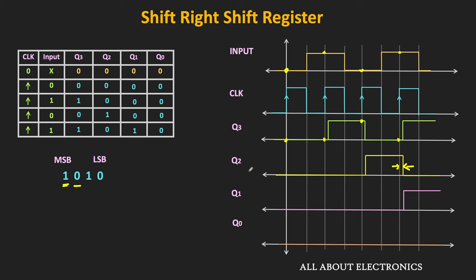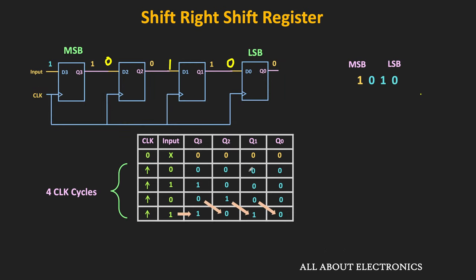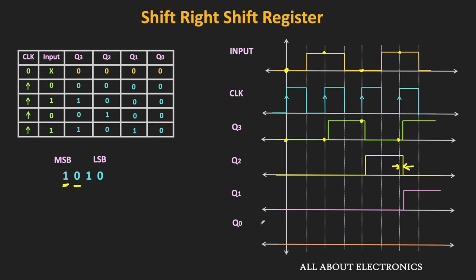Similarly, we can see the timing diagram of Q1 and Q0. Since Q2 is connected to d1, the d1 flip-flop responds to Q2 output. At the first, second, and third clock pulses, Q2 is 0, so Q1 remains 0. At the fourth clock pulse, Q2 is 1, so Q1 also becomes 1 — only after the propagation delay of the flip-flop. Since Q1 is 0 at every clock pulse up to that point, Q0 remains 0 through all 4 clock pulses.